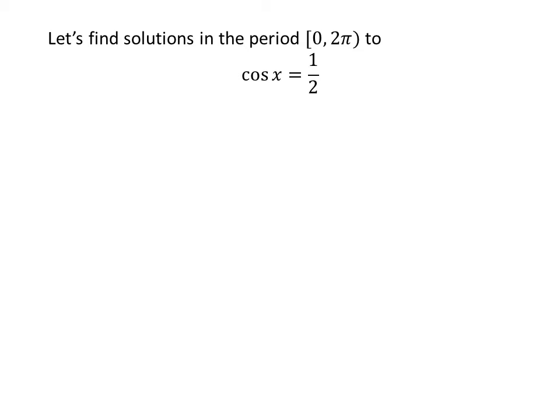As the cosine function is a periodic function with a period of 2 times pi, let us first find the solutions to the equation cosine of x is equal to half in the interval 0 to 2 times pi. We know the value of cosine of pi upon 3 is half.